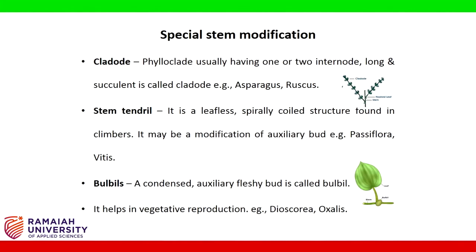Bulbil: a condensed axillary fleshy bud is called a bulbil. It helps in vegetative reproduction. Example: Dioscorea, Oxalis.